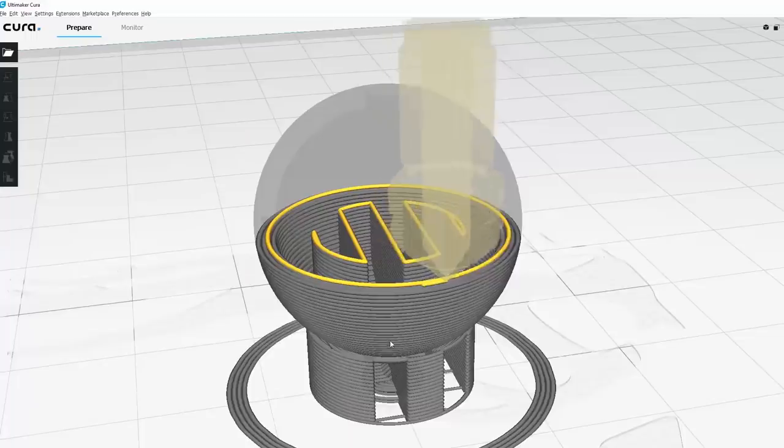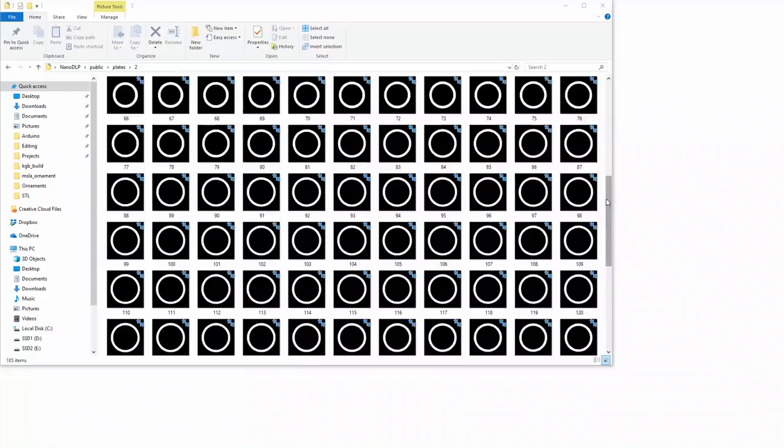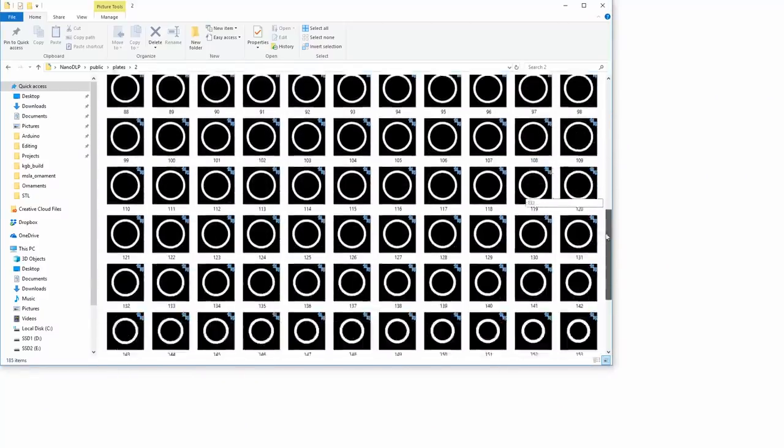Where do you get those images from? Well, when you're 3D printing you take a file called an STL file, and you use a slicer program that cuts it into layers. But in this case you need images, black and white images of each layer instead of a tool path for the 3D printer to follow. So what I'm using is something called NanoDLP.